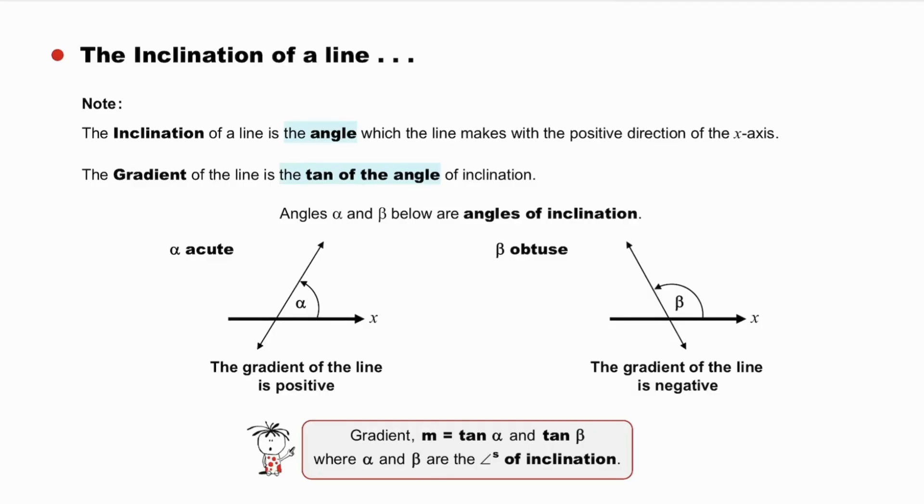In each case, the gradient m is the tan of the angle. The tan of an acute angle is positive, whereas the tan of an obtuse angle is negative.